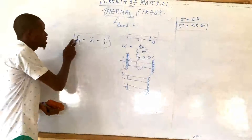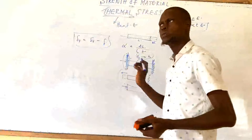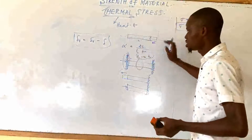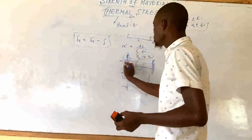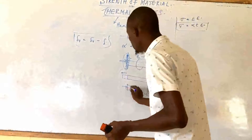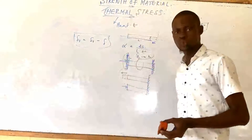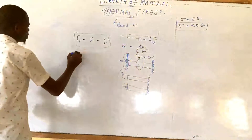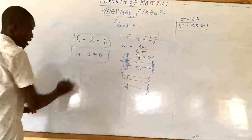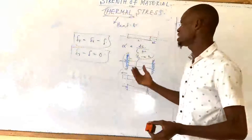The total deformation of the member is equal to the deformation due to temperature minus the deformation due to the compressive force from the fixed point. The total deformation of the member will be equal to zero, because the deformation in one direction is equal and opposite to the other, so: D_T minus D_F equals zero.